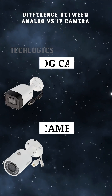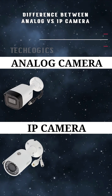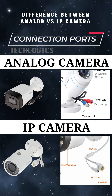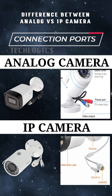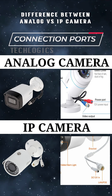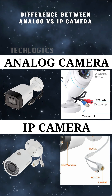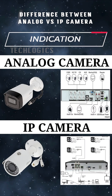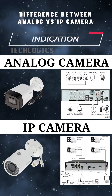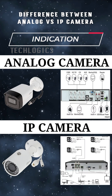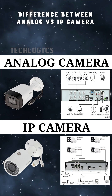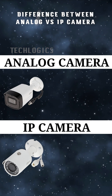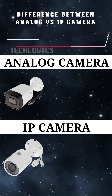Physically, IP cameras and analog cameras have several distinct differences, which can help you identify them and understand their functionalities. Analog cameras use coaxial cables to transmit an analog video signal. They often require multiple cables for power, video feed, and audio, if applicable. This can lead to a bulky cable mess during installation.